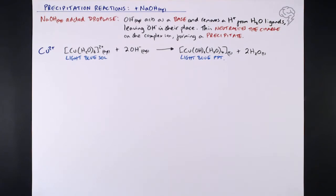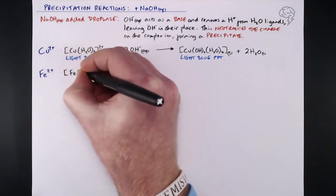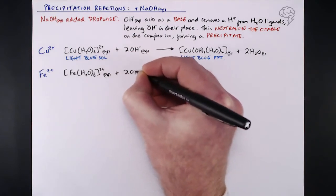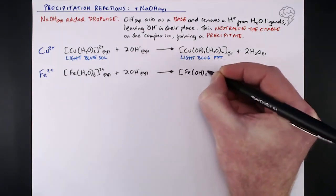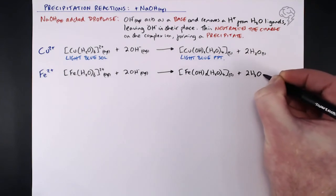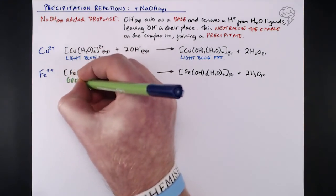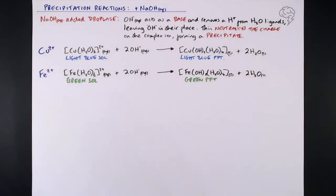Moving on to iron 2+. Again, we're starting with the hexa aqua 2+ complex ion, [Fe(H₂O)₆]²⁺. Because it's 2+, we're reacting with two hydroxide ions, taking two H⁺ away from two of those waters. Just like copper, it's exactly the same complex structure except it's got iron 2+ in the middle — [Fe(OH)₂(H₂O)₄] and two H₂O. Color change? Also like copper, there's no color change per se. We've got a green solution of Fe²⁺ in aqueous solution and then we end up with a green precipitate. The formation of a precipitate is pretty easy to see when you add the sodium hydroxide.